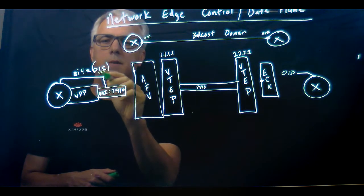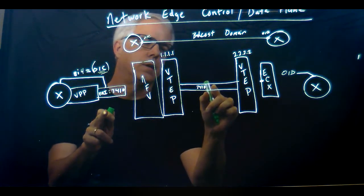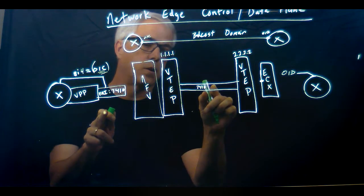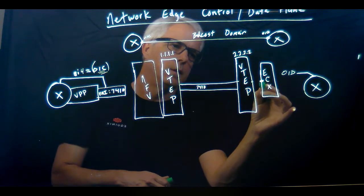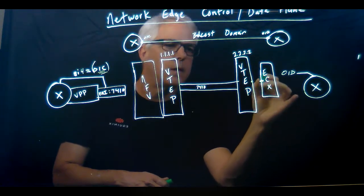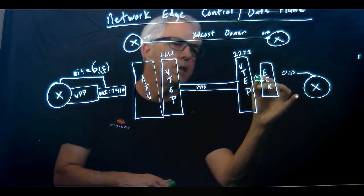01C MAC address gets carried across this infrastructure across the VNI 7410. 01C shows up here on the ECX switch. So now this 01C MAC address has showed up on the ECX switch.